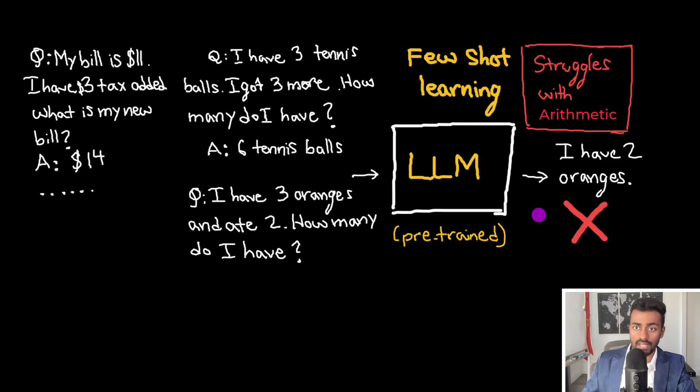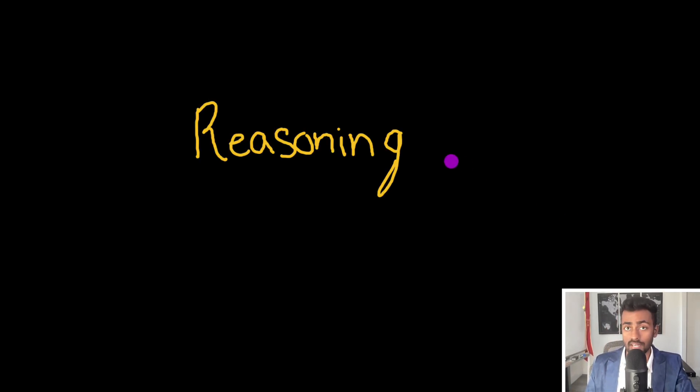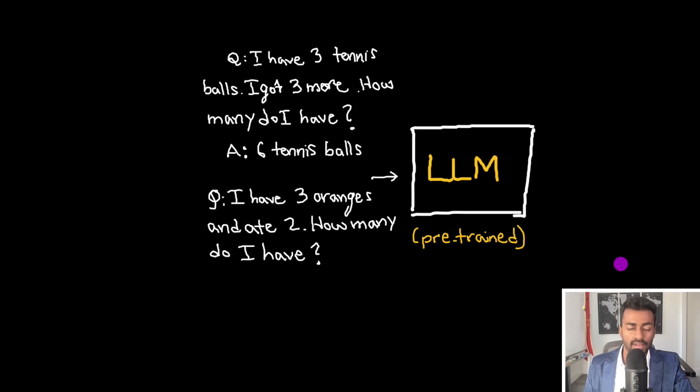Well, this is where the second component comes in. And that is using reasoning. So now we have this prompt that has an example here of tennis balls, I have three tennis balls, I got three more, how many do I have? And we have six tennis balls. And then it proceeds with the original question that we want to ask. This is how we do it in one shot learning.